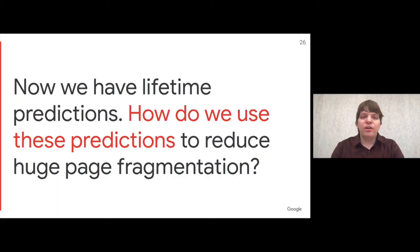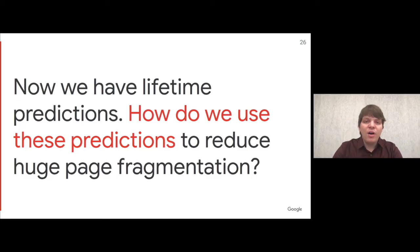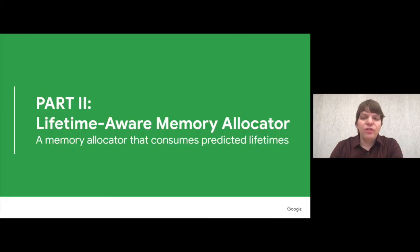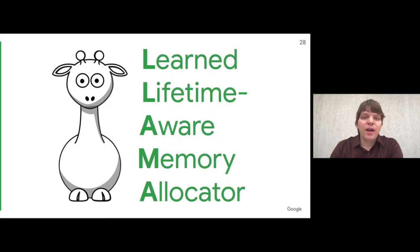So now we have a way to predict object lifetimes at the time of allocation. However, this alone wouldn't reduce fragmentation. How can we use these potentially imprecise predictions to improve fragmentation in C++ workloads? To this end, we introduce a new type of memory allocator specifically designed to consume these predictions and use them to reduce fragmentation. We call this the Learned Lifetime Aware Memory Allocator, or LAMA for short.